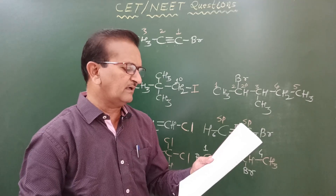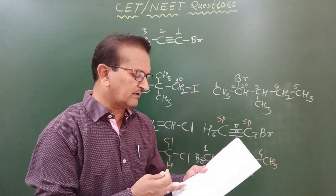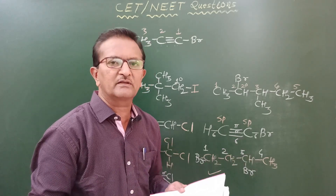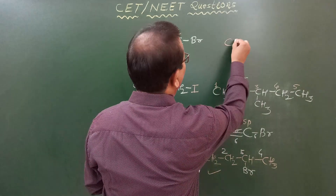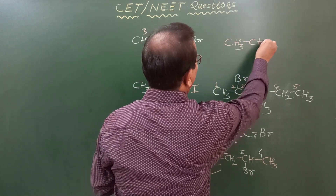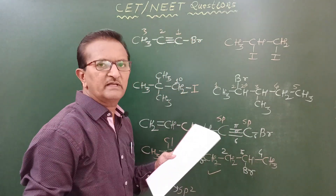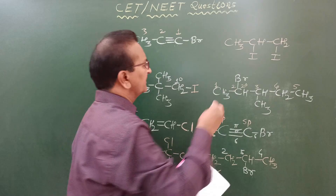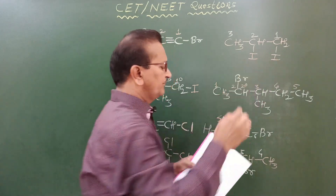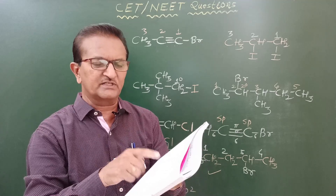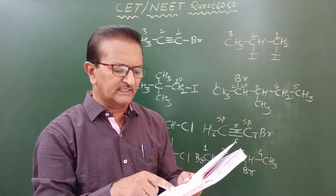Question 12: Propylene diiodide is which type — 1,1-dihaloalkane, 1,3-dihaloalkane, or 1,2-dihaloalkane? The structural formula is: CH₃–CHI–CH₂I. Numbering the carbon atoms gives positions 1 and 2 for the iodine atoms. Therefore, propylene diiodide is a 1,2-dihaloalkane. Option C is correct.